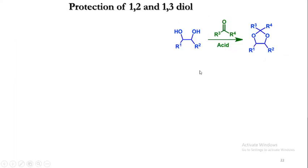The 1,2-diol is easily converted into a cyclic acetal, therefore the protection takes place through the formation of a ketal, acetal, or carbonate.